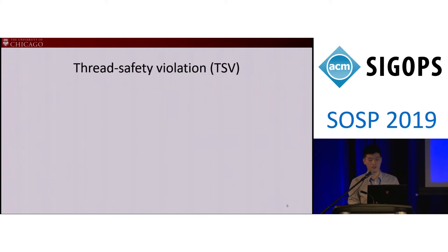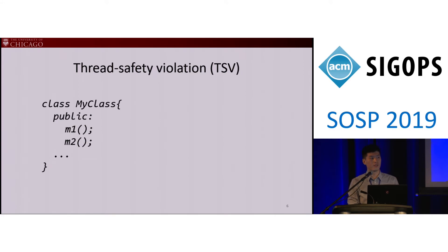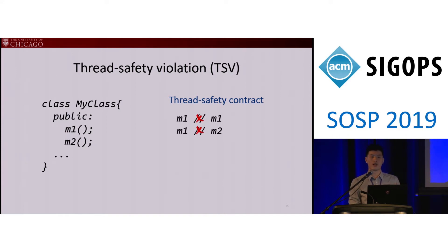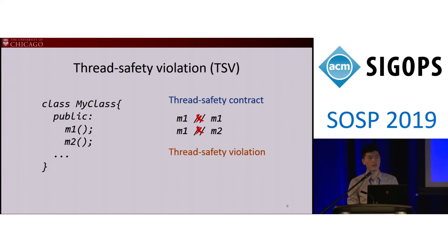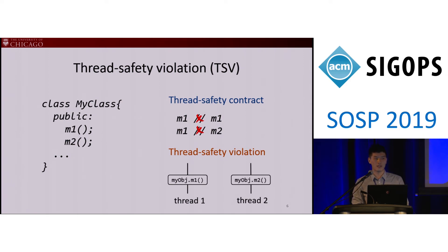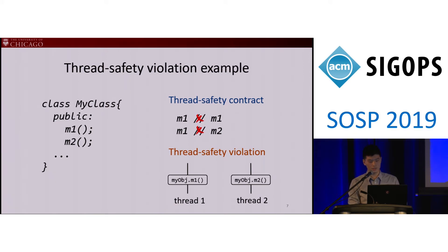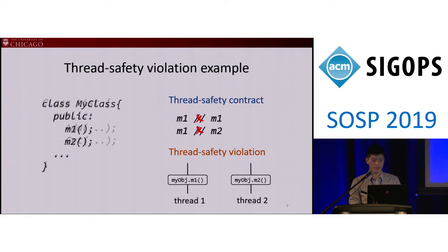Our work tackles a critical type of concurrency bug called Thread Safety Violation. In object-oriented programs, there are thread safety contracts associated with classes about which methods cannot be called concurrently. A Thread Safety Violation, or TSV, occurs if two threads concurrently invoke two conflicting methods on the same object at the same time. The outcome would be crashes or severe misbehavior of the software.